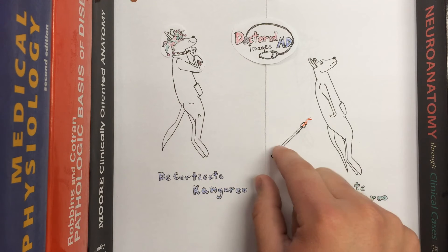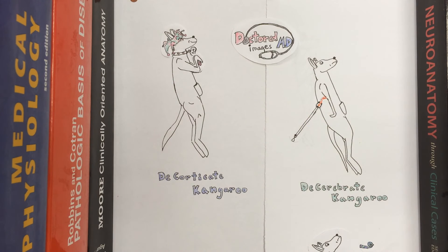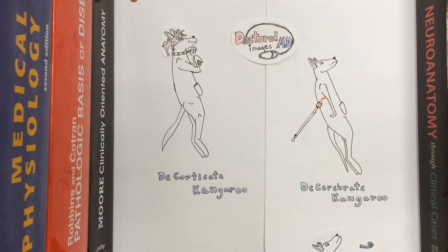A patient in a coma presented with a painful stimulus could also present decerebrate posturing, as seen in the decerebrate kangaroo. Decerebrate posturing is considered the worst of the two postures. In fact, a patient who presents with decorticate posture and progresses to decerebrate posture has a more guarded outcome than one who would simply remain in decorticate posturing. The opposite is also true — regression from decerebrate posture to decorticate posture is seen as a positive sign.